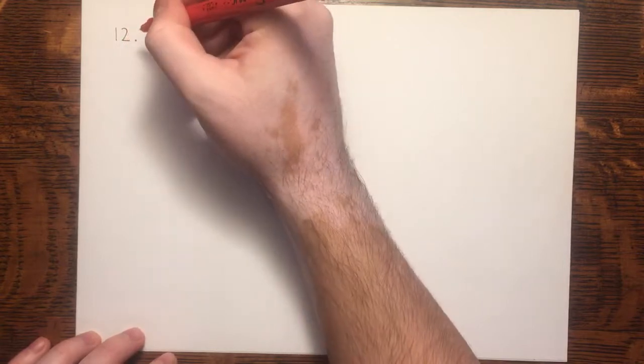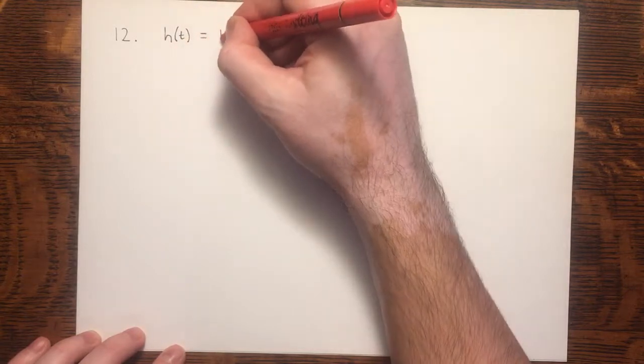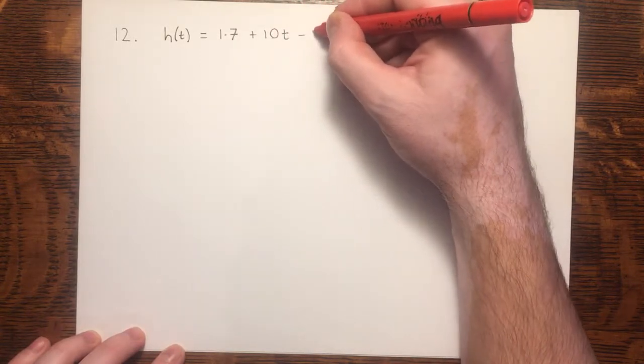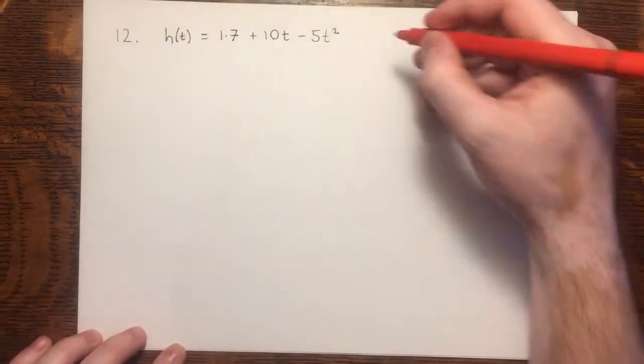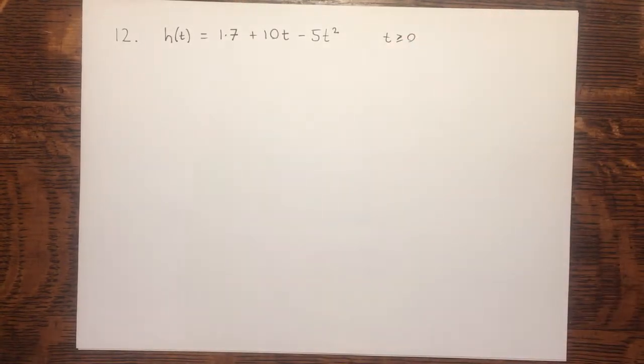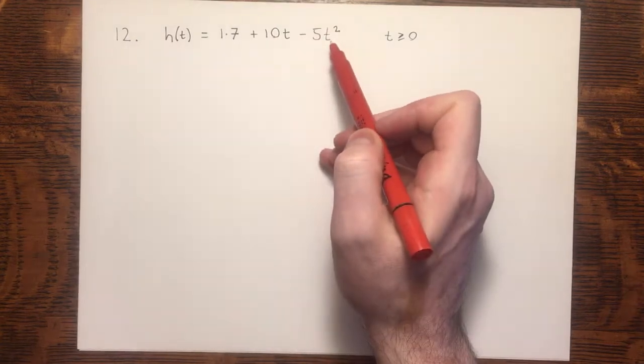Question 12 involves modeling with quadratics. So first of all, let's have a look at the quadratic that we're given. In question 12, we are told that we've got h in terms of t equals 1.7 plus 10t minus 5t squared. And we're told that time is always going to be positive or at least zero. We're not going to have any negative time. Now we're given quite a bit of text to read. It says an athlete launches a shot put from shoulder height. The height of the shot put in meters above the ground can be modeled with this function here. t is time. This is the height.